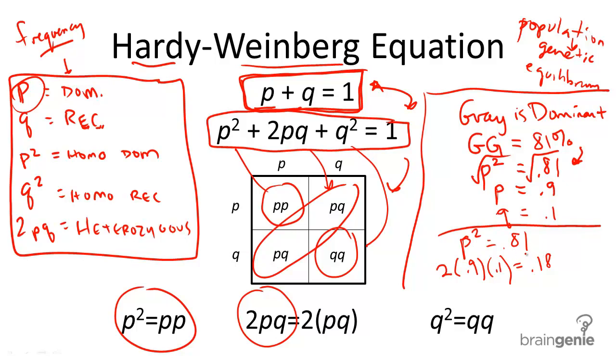So, how do we figure out the total allele frequency for gray, for not just the big G, big G, but also for the big G, little g combined? We add them. So, total up 0.81 plus 0.18, and your answer is 0.99.